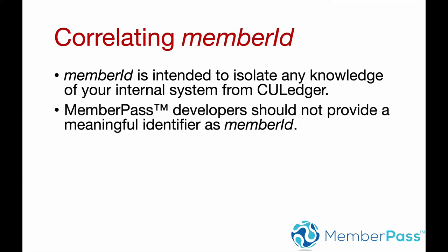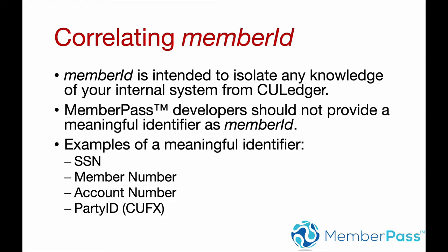What this really means is you shouldn't provide a meaningful identifier as the Member ID. Create a correlation table or something in your system that ties the person to the Member ID — just a simple table. To give you an idea of things we don't want pushed in: things like a social security number, a member number, an account number. If you're using CUFX, party ID. These are all unique and special to your system — they're important to your core and your ancillary systems.